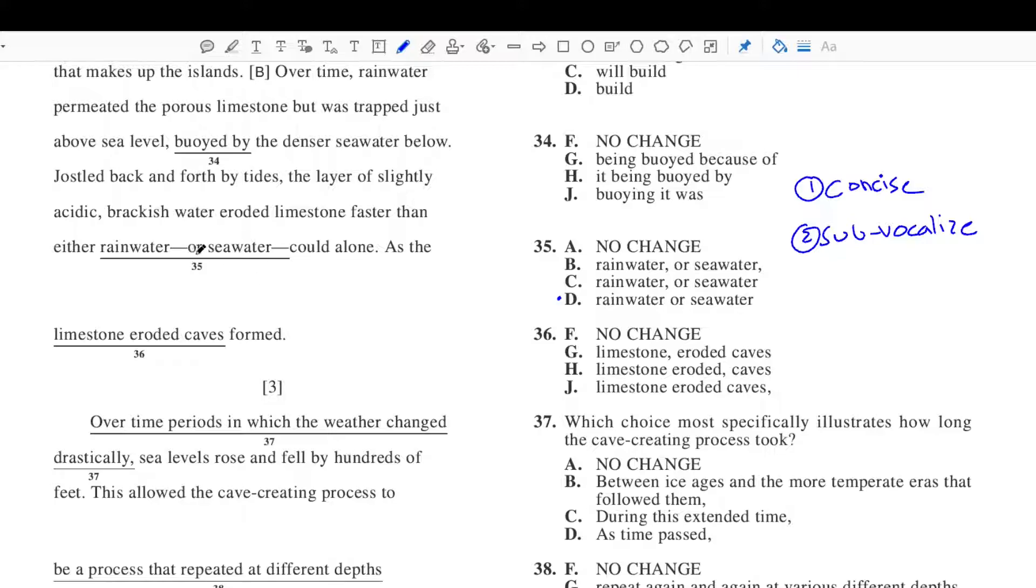Either way, it's not necessary. So let's pretend that it wasn't necessary and we took it out. Would this sentence make sense? Well, this word either, right, kind of gives us a little clue. Either rainwater could alone. Either rainwater or what? Okay, so we definitely need this element here. Otherwise, this either wouldn't make any sense. So we're going to need this information. It's definitely necessary. And therefore, answer choice A would be incorrect.